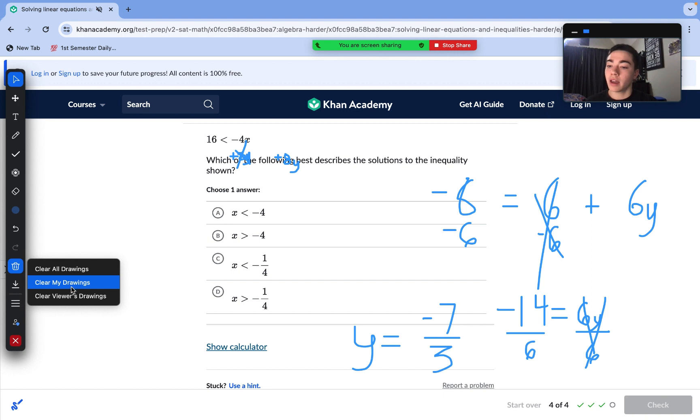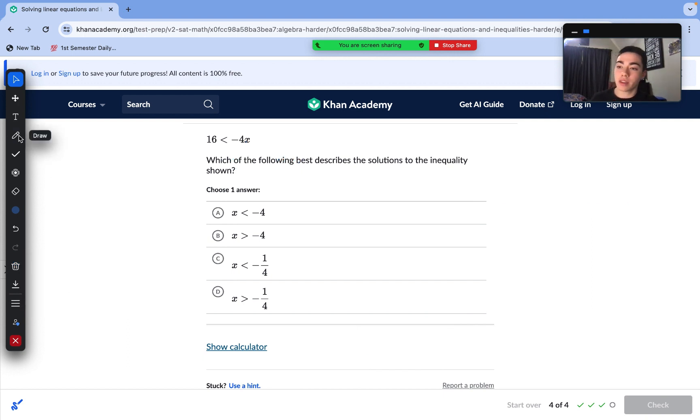All right, last question here. Super easy. We went over this in the first video, actually. They're just trying to fool us on switching the inequality sign. Very important here. I told you guys that they would test this skill in the first video. We have 16 is less than negative 4x. In order to get the x by itself, we need to divide by negative 4. So we divide each side by negative 4.